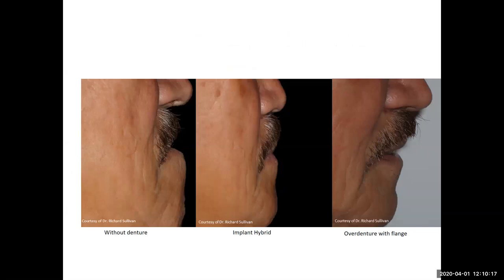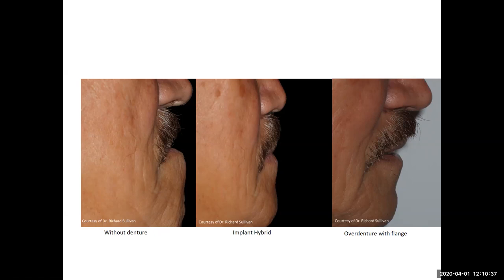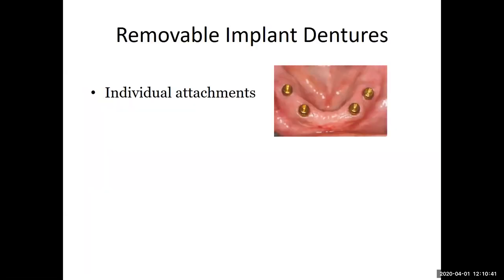Looking at this photo: on the left-hand side without a denture, you can see how sunken in the patient's lip is. Even with an implant hybrid denture, the patient is not filled out in the lip area. In this particular case we have an overdenture with a flange, which makes the patient look more natural — that transition zone needed to be filled in with acrylic to fill out the patient's natural lip.